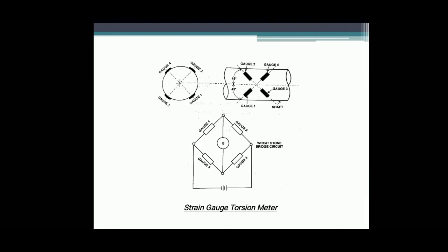Looking at the figure of the strain gauge torsion meter: on the shaft, four strain gauges are bonded. These four strain gauges are mounted on a 45-degree helix with the axis of rotation. The gauges are placed in pairs diametrically opposite to each other — gauge one and gauge four, gauge two and gauge three. All four strain gauges are connected to a Wheatstone bridge circuit which is used to measure the change in resistance. The system is temperature compensated and a change in resistance will occur only due to torsional deflection.